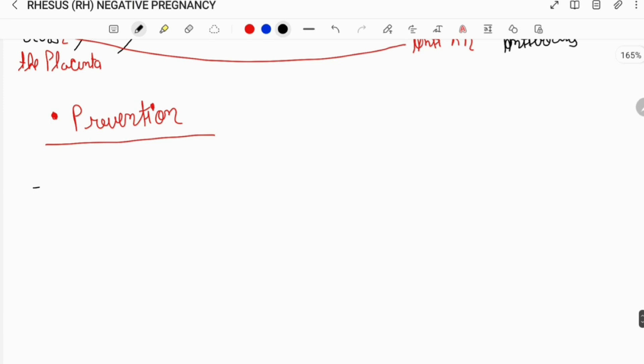we use a special injection known as anti-D injection, which is given intramuscularly during the pregnancy.